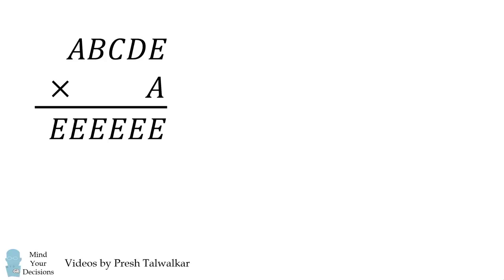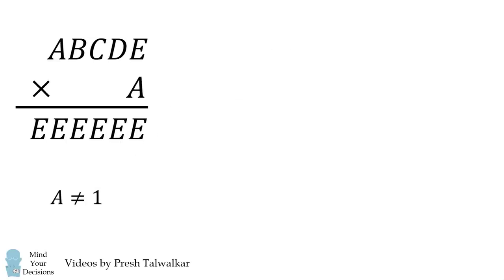Here is one way to solve the problem. First consider the case that A is equal to 1. In that case ABCDE multiplied by 1 will be exactly the same number. This will not be equal to a six-digit number. Therefore A cannot be equal to 1. We'll eliminate this possibility.